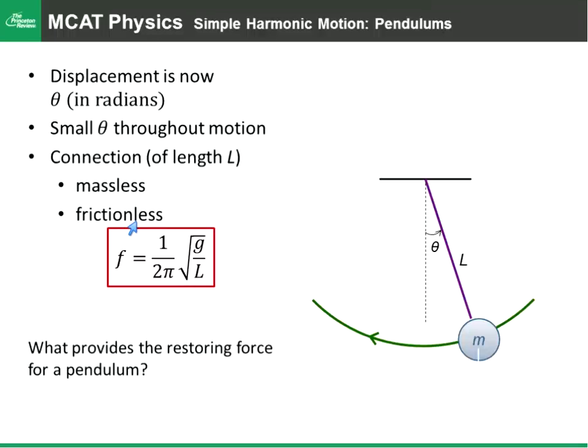And also frictionless. We can't have any damping force from friction in the bearing up at the top, just as you can't have any friction in the floor if you're talking about a mass oscillating back and forth along a floor or connected horizontally to a spring.